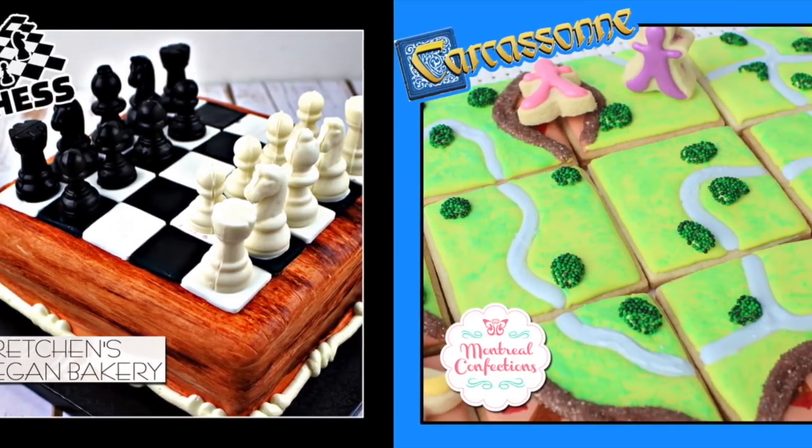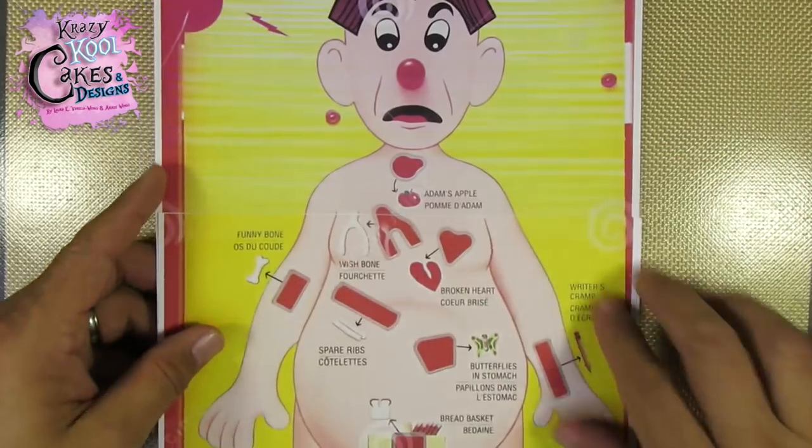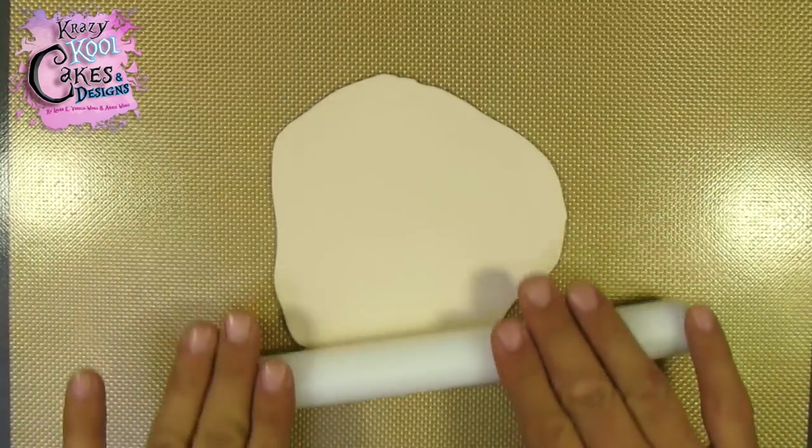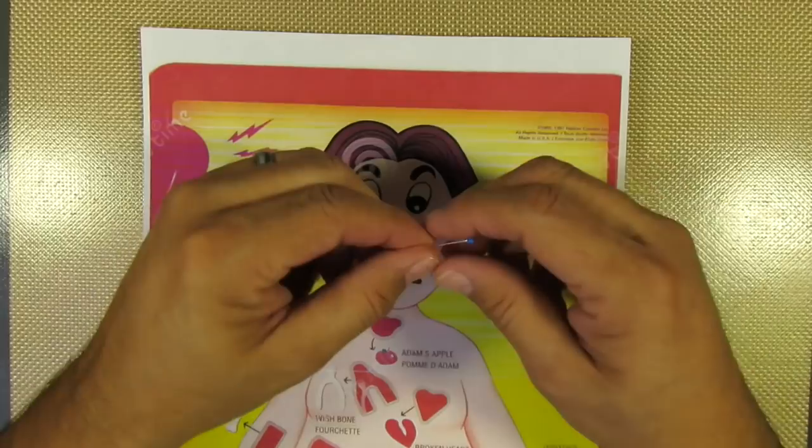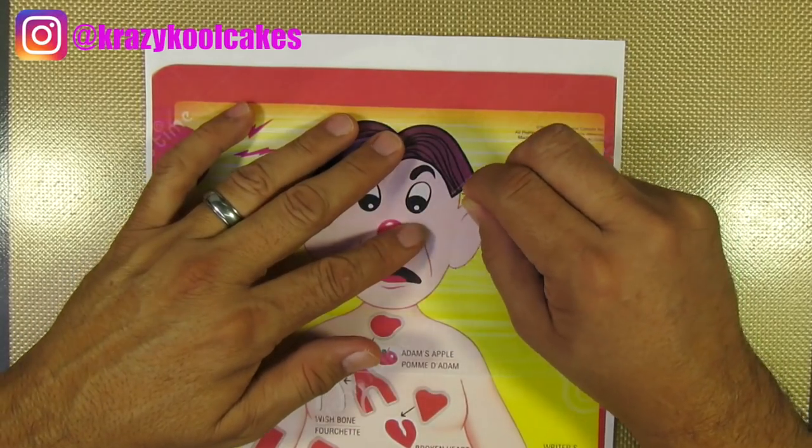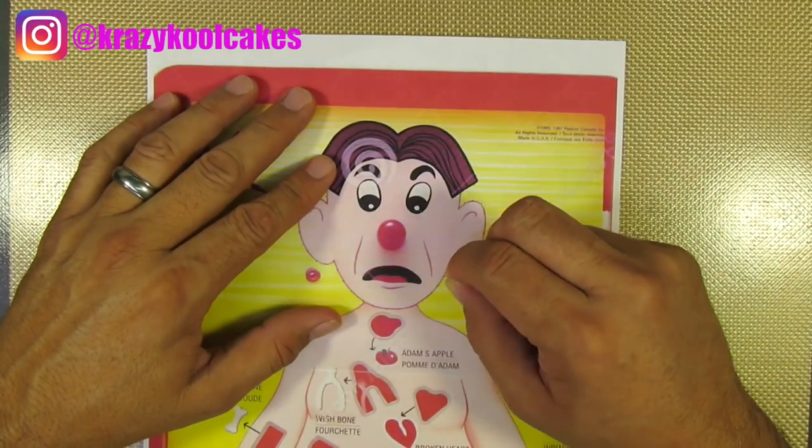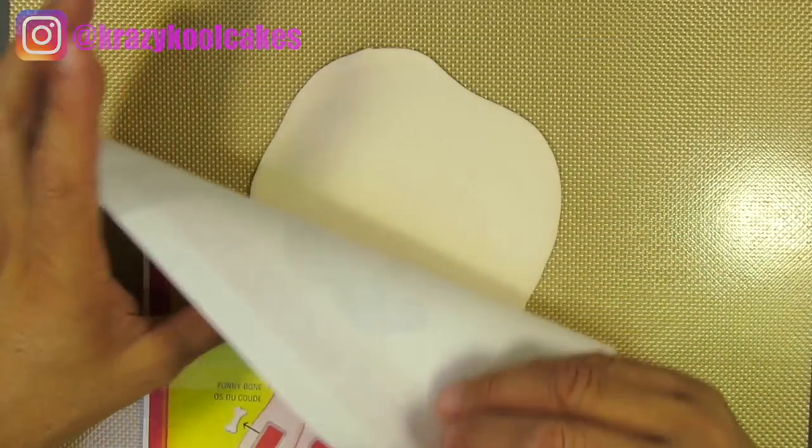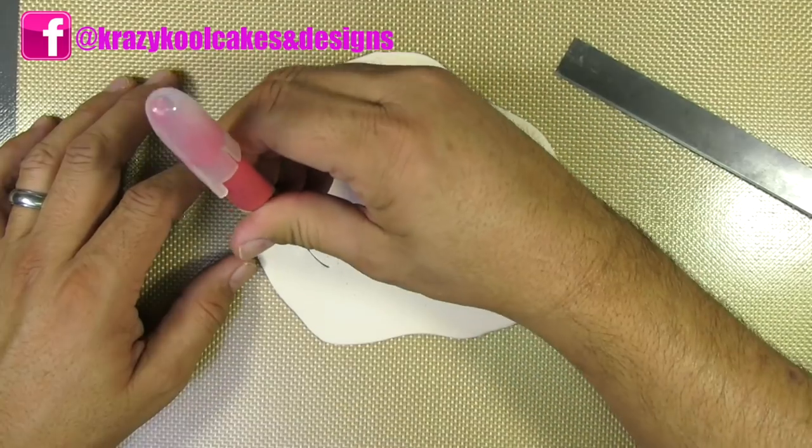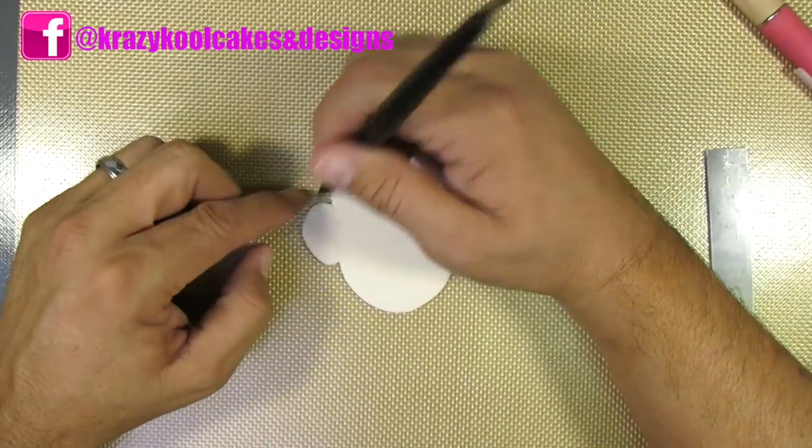This is gonna be fun. We're making an exact replica of the operation game so we've printed out a picture of the poor patient to the actual size. We'll be rolling out all of our flesh colored gum paste to about an eighth of an inch thick. Arnie's come up with a very easy way to replicate any image. I just take a small pen and poke holes all along the edge. Then I just carefully follow the holes with my blade to cut out the shape.